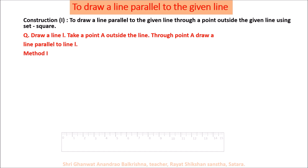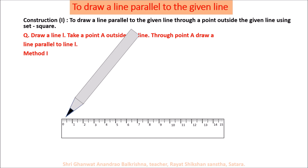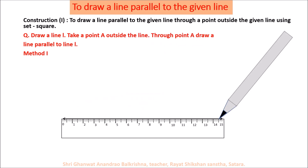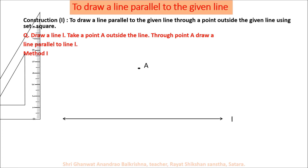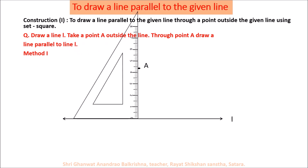In this method, take a ruler and draw line L. Take point A outside the line L. Now use a set square and move it towards point A. Set the set square as shown in the diagram. Now take another set square such that its right angle is in the upward direction.